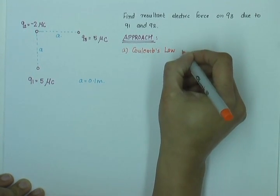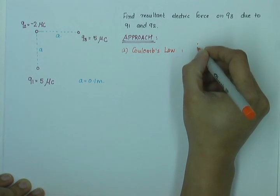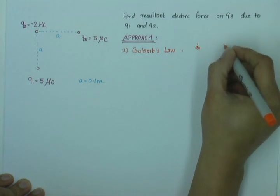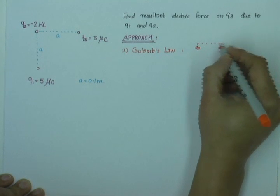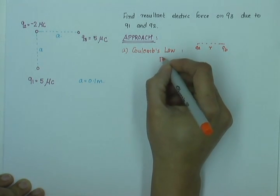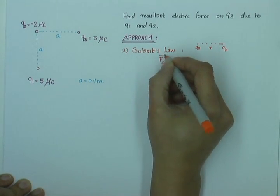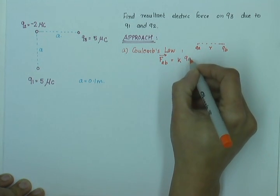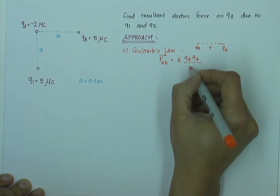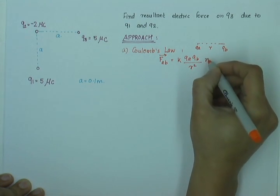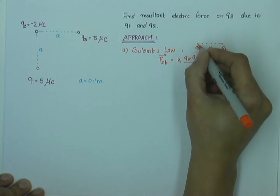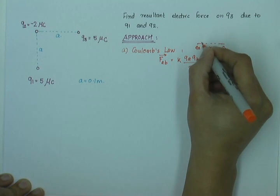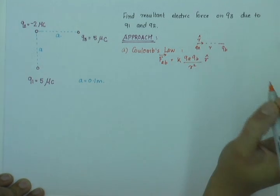Coulomb's law gives us that if there are two point charges QA and QB separated by a distance R, then the force exerted by A on B is given by K times QA QB upon R square times R cap, where K is Coulomb's constant and R cap is a unit vector from QA to QB.